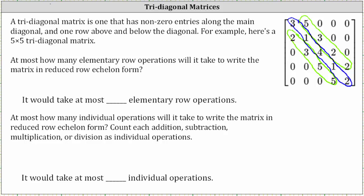That would be four plus four for the zeros, and then it would take up to five elementary row operations to get ones along the main diagonal, so we'd add five. The sum is 13. Also notice how there are 13 elements in the matrix. It would take at most 13 elementary row operations to write the matrix in reduced row echelon form. We say 'at most' because it is possible that one row operation could produce two zeros, or we could already have a one along the main diagonal.